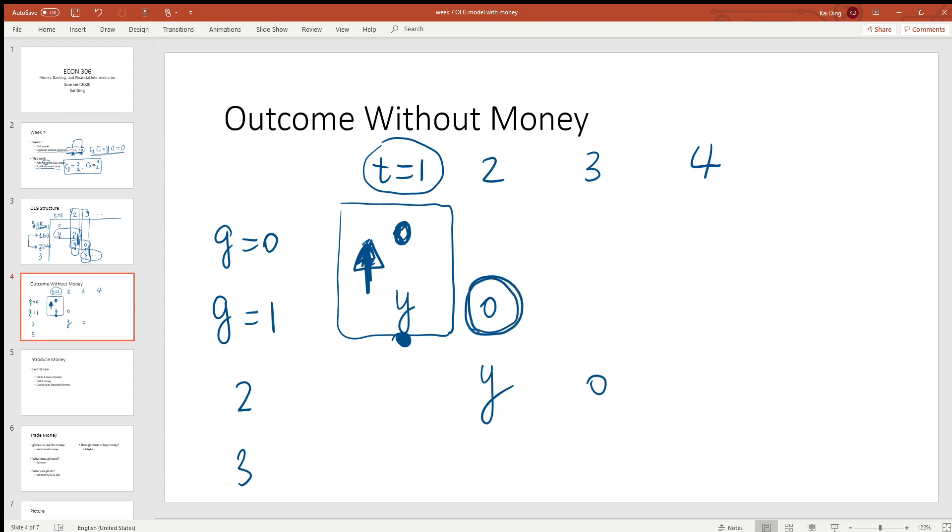When we become old in period two, we can no longer climb the tree and we have no bananas to eat. So we really want some bananas when we are old in period two. However, by period two, our parents are no longer alive. As a result, we have what the parents' generation wants, but they do not have what we want.